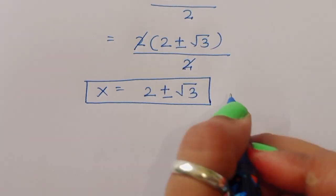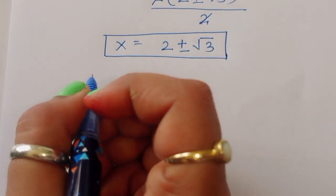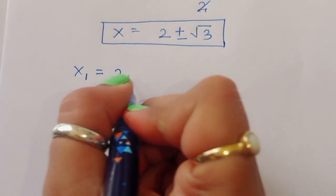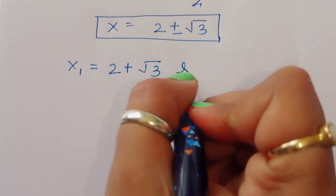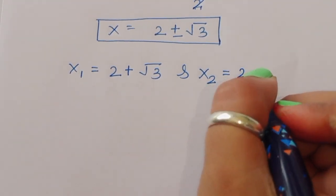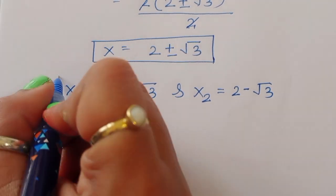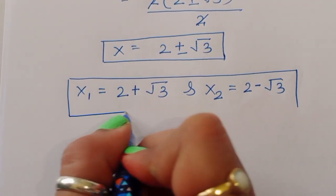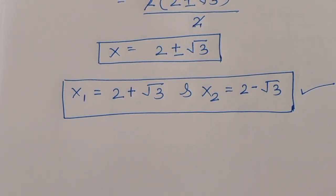Therefore, in this equation, the value of x₁ is equal to 2 plus square root of 3, and the value of x₂ is equal to 2 minus square root of 3. These are the two solutions. Thank you.